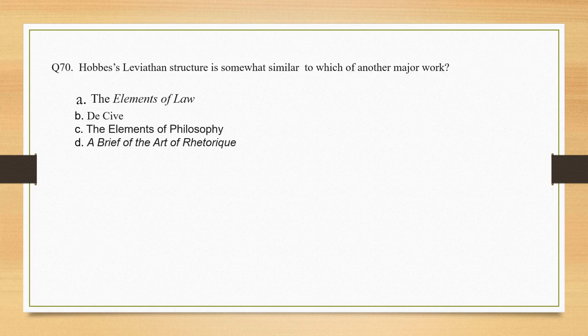Hobbes' Leviathan structure is somewhat similar to which other major work? The correct option is option A: the Elements of Law.